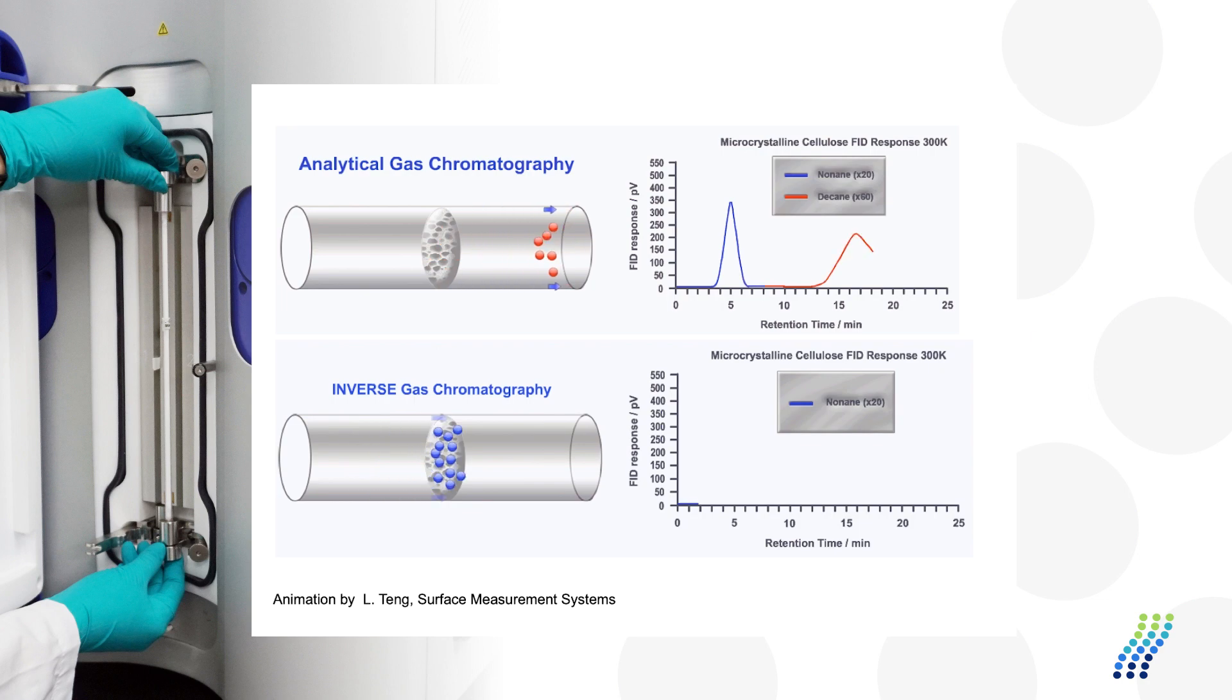The main difference between analytical GC and inverse GC is that we invert the roles of the stationary and mobile phase.